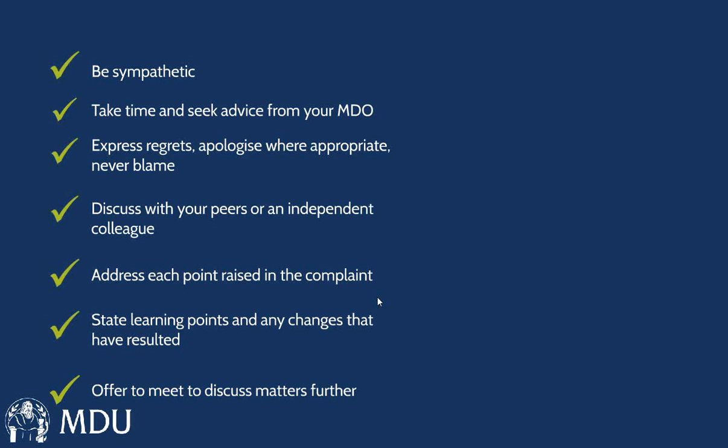Not all complaints will have relevant learning points, but when they're there, try to make them specific to the complaint and link them together. Bland statements such as 'we'll learn from this' or 'we'll make sure this won't happen again' can sometimes be reassuring, but complainants are now very sophisticated and will often come back and ask what's changed, what's going to be different. So try to make it specific. And if you indicate that you are going to make changes, make sure they're implemented in a timely fashion — I've seen cases where a complainant comes back after six months asking about promised changes.